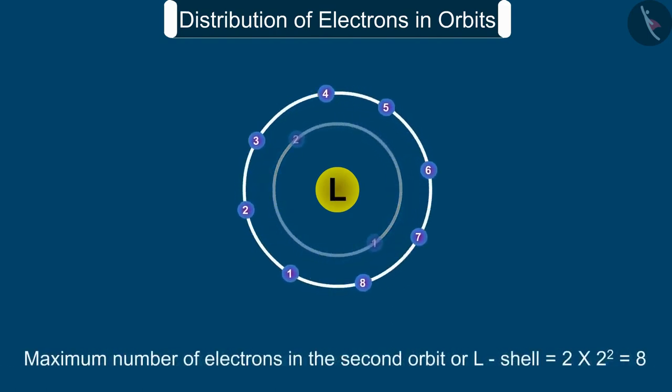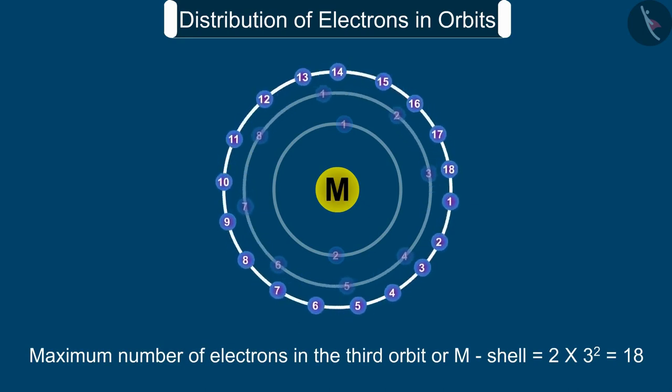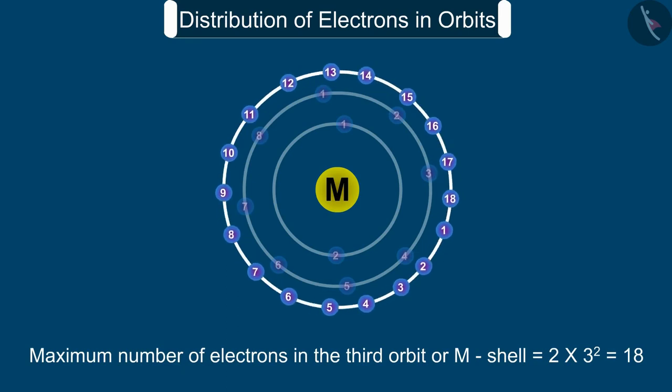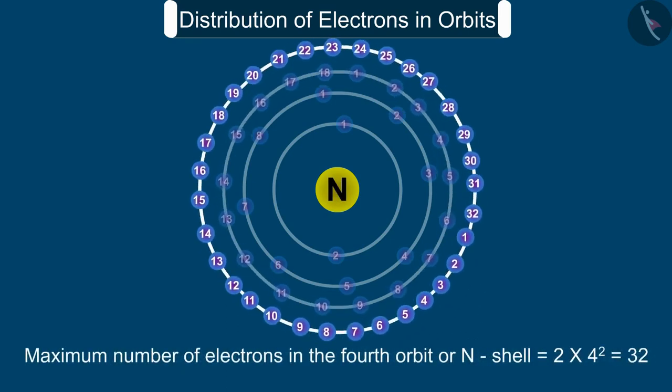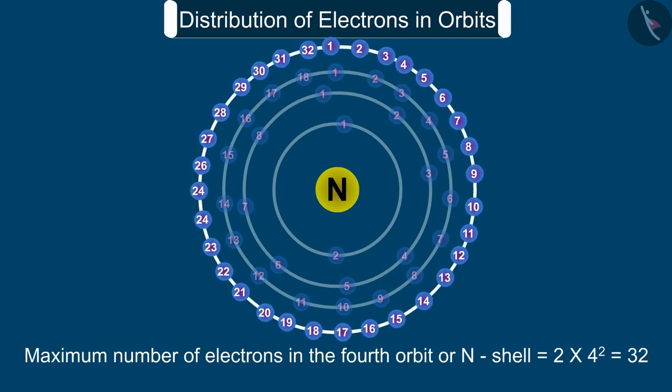In the second orbit or L shell is equal to 2 into 2 square, that is 8. The third orbit or M shell is equal to 2 into 3 square, that is 18. The fourth orbit or N shell is equal to 2 into 4 square, that is 32.